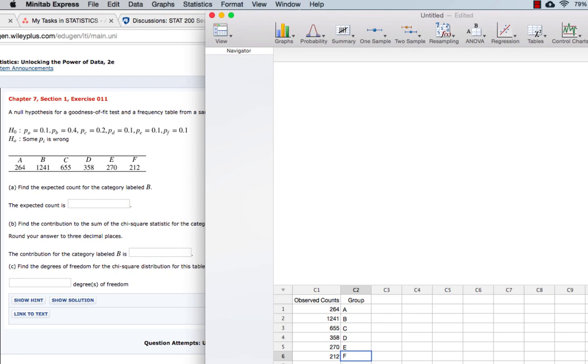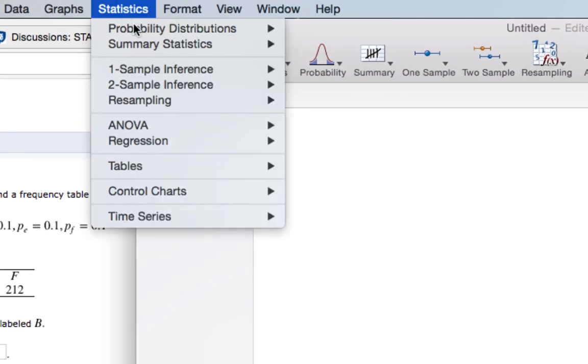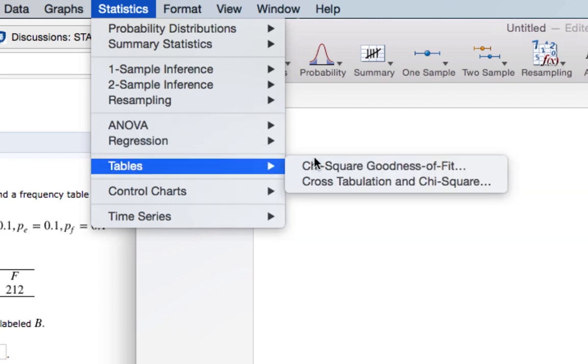Now that we have all of our data entered into Minitab Express, we can conduct our chi-square goodness-of-fit test. Under Statistics, Tables, this is a chi-square goodness-of-fit.